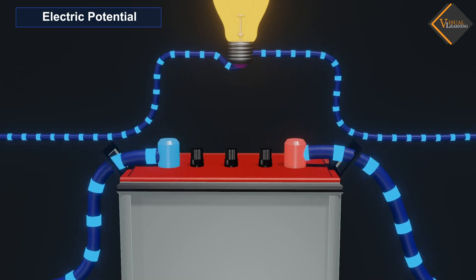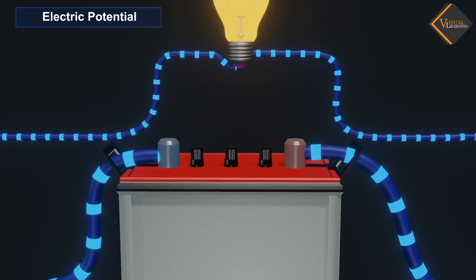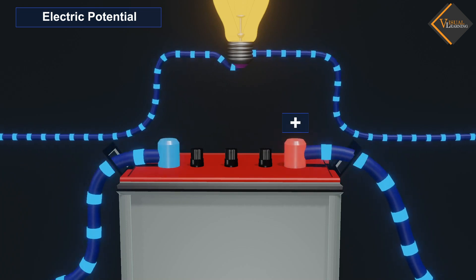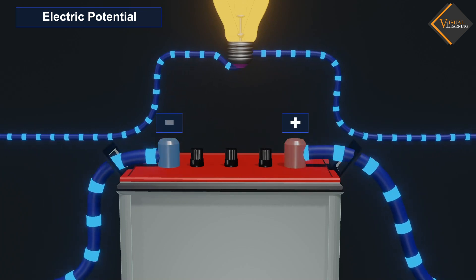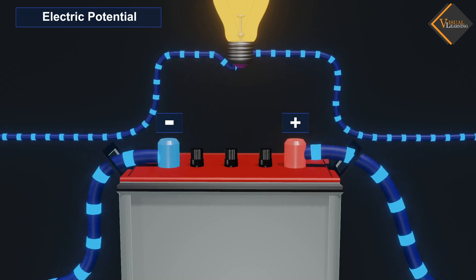In a battery, there are two terminals. One is a positive terminal. Another is a negative terminal. These terminals are termed as electrodes of the battery.